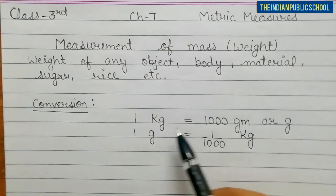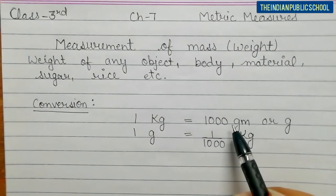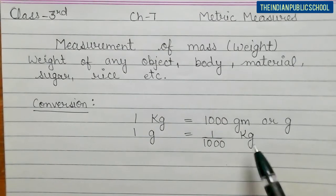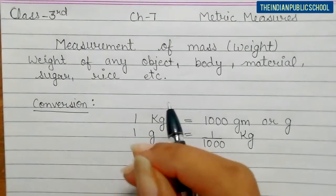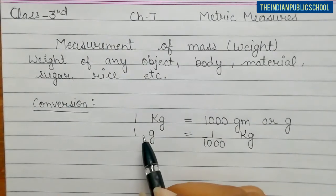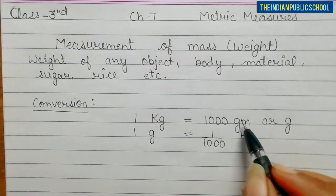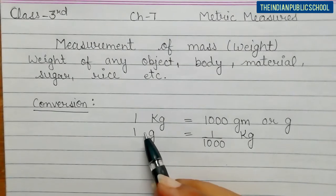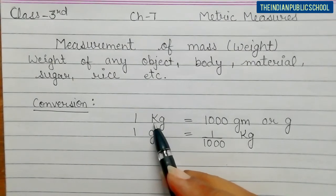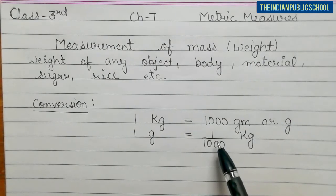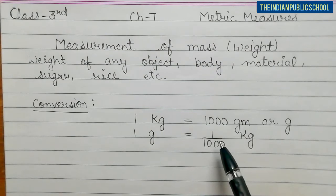The conversion is: in one kilogram there are one thousand grams. So 1 kg equals 1000 grams. If you are calculating one gram, that will be 1/1000 kg. It means one gram is a very small amount - if you multiply it 1000 times it equals one kilogram. The unit of gram can be written as gm or g, and kilogram as kg. These are the conversions for measurement of weight or mass. Now we will solve some questions.